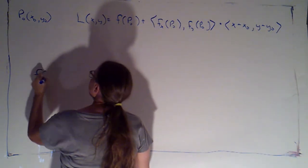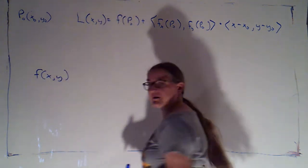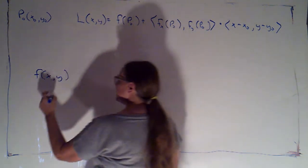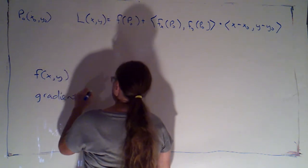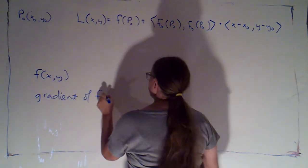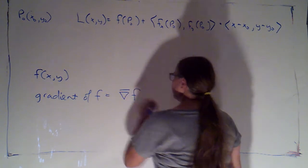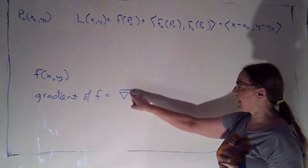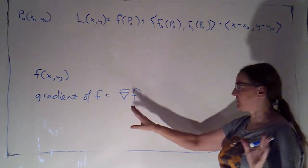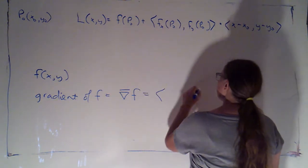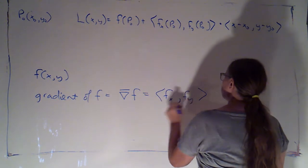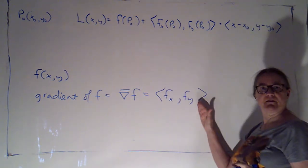If I have f of xy, a function of two variables, the gradient of f, which is denoted like so, there's a triangle with a bar over because this is a vector, and then I put the name of the function, that's just the vector whose component functions are the two partial derivatives.